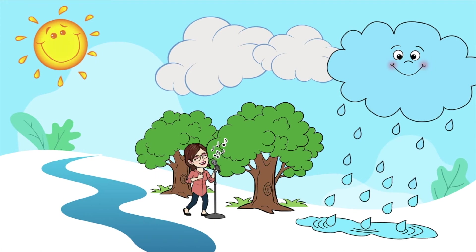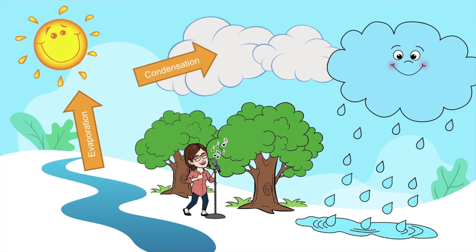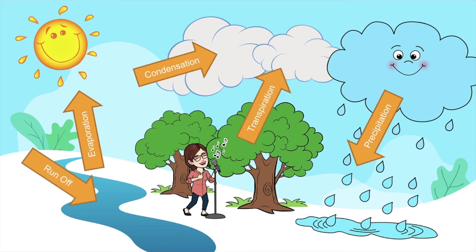Now let's see if you can join me in the water cycle song. Are you ready? Here we go. Water travels in a cycle, yes it does. Water travels in a cycle, yes it does. Leaves lose water in transpiration. Water flows due to runoff and it all accumulates.